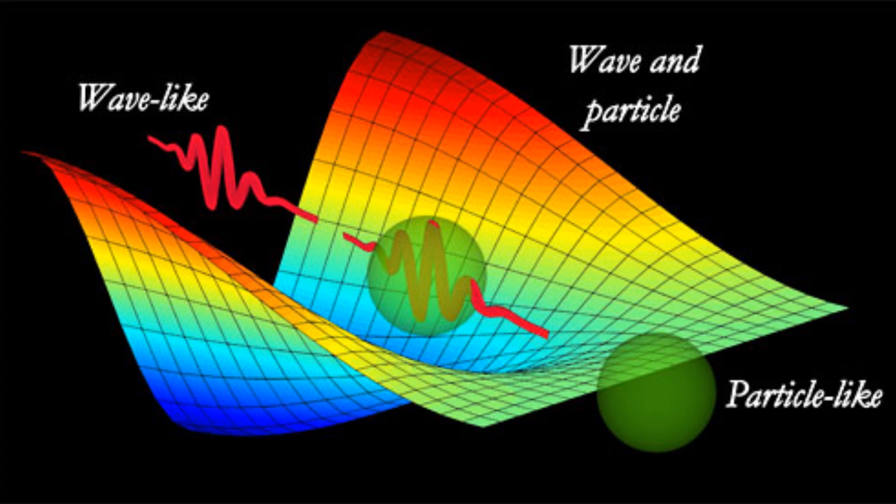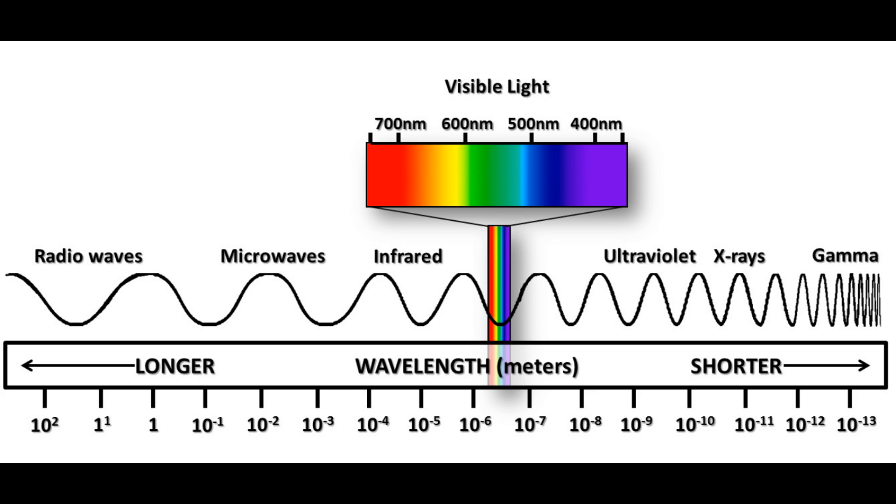At any rate, this is way beyond what we need to understand the cosmic microwave background. In our discussions, we will usually just mix the wave and particle properties of light by referring to photons of wavelength lambda, when we actually mean something that is both an electromagnetic wave with wavelength lambda and a photon of energy E equals hc over lambda.